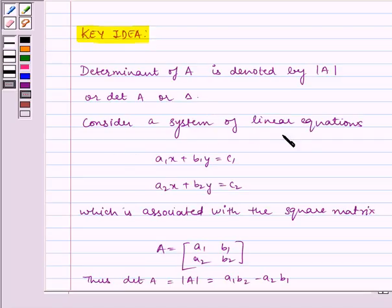Consider a system of linear equations: A1x + B1y = C1 and A2x + B2y = C2, which is associated with the square matrix A = [A1, B1; A2, B2]. Thus, determinant |A| = A1B2 - A2B1.